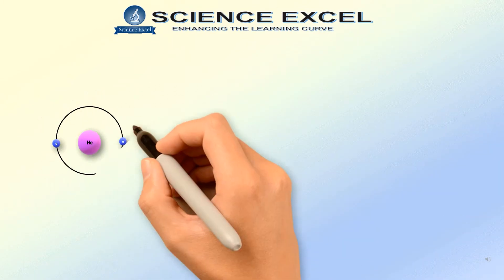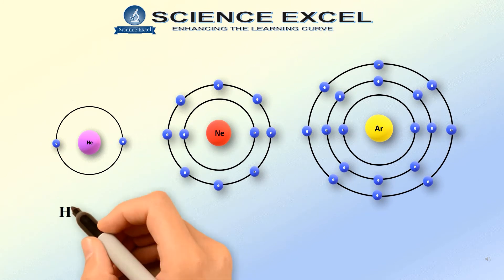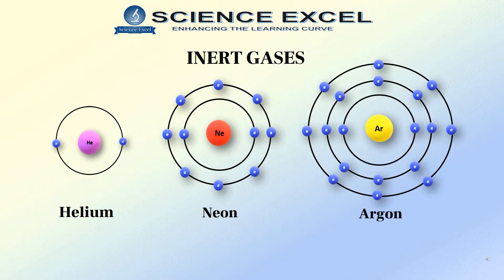This stable state is only found in a few elements like helium, neon, argon, etc., which are called the inert gases. Hence, these elements do not combine with any atom. The atoms of all elements other than these inert gases combine because they have incomplete valence shells. And this process enables them to attain a stable state.